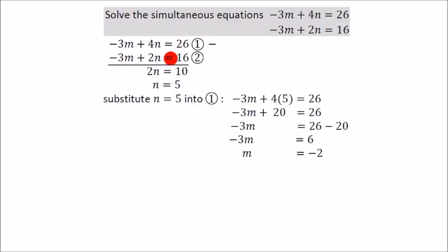In these simultaneous equations, you can see we've got minus 3m here and there. If you have exactly the same thing in both equations, you should subtract them.